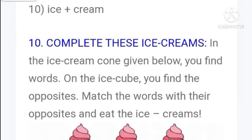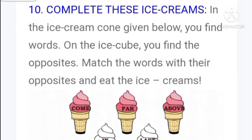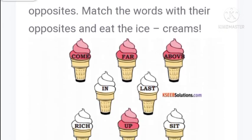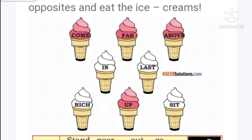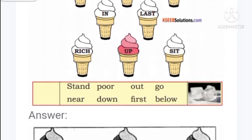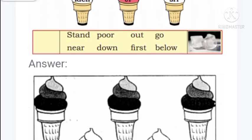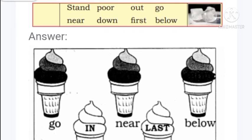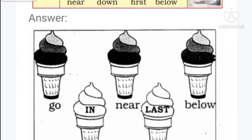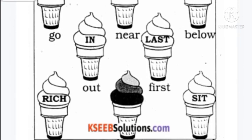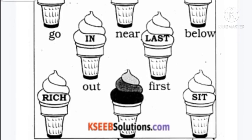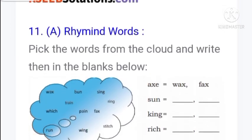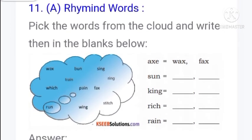Now complete the ice cream activity. Find words on the ice cubes and match them to their opposites in the box. Come - go. In - out. Near - far. Above - below. Last - first. Rich - poor. Up - down. Sit - stand.